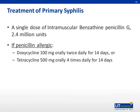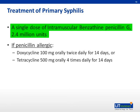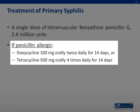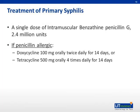Therapy for primary syphilis is benzathine penicillin G 2.4 million units intramuscularly in a single dose. If the patient is allergic to penicillin, doxycycline 100 milligrams orally twice daily for 14 days, or tetracycline 500 milligrams orally four times daily for 14 days, are the alternatives. Of note, penicillin-allergic patients with syphilis and HIV whose compliance cannot be ensured should be desensitized and treated with penicillin.